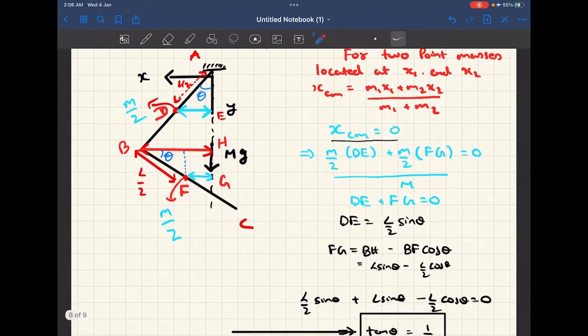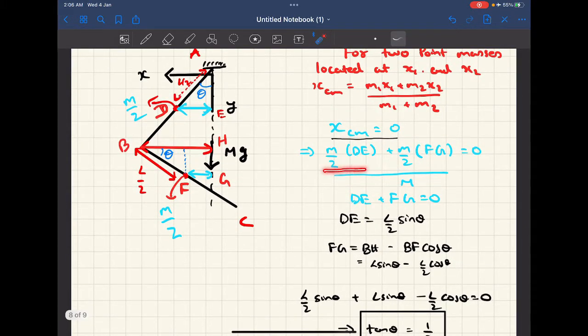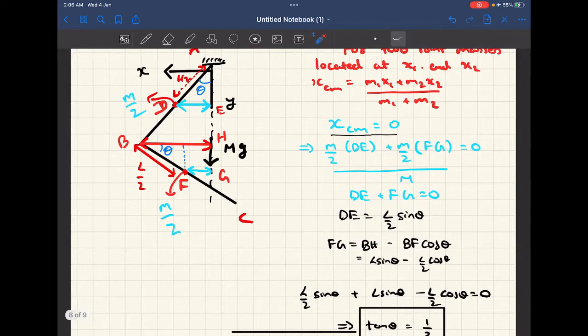That's why I have written m by 2 times D for the first m1 x1 part. Now the second mass is just this m by 2, and this is the slightly tricky part. The x coordinate of this center of mass from our axis is FG. Now in order to find FG, we need to play with some triangles.